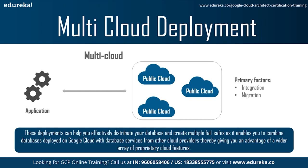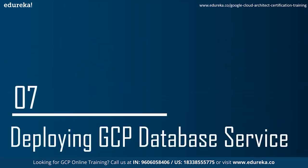The third deployment type is multi-cloud deployment — this helps effectively distribute your database and create multi-failsafes by combining databases on Google Cloud with database services from other cloud providers, giving you a wider array of proprietary cloud features. Two primary factors: first, integration — ensure client systems can seamlessly access databases regardless of the cloud they're deployed on, using open source client libraries to make databases smoothly available across clouds. Second, migration — since there are multiple cloud providers, you may need to migrate data between clouds using database replication tools; Google Storage Transfer Service is one such tool.